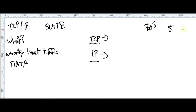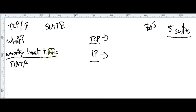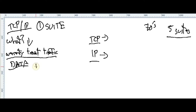Back in the 70s, there were up to five completely different suites to accomplish this — to guarantee traffic and data. TCP/IP is one of those suites, and it was the winner. It allows you to guarantee traffic between endpoints, between two different points.